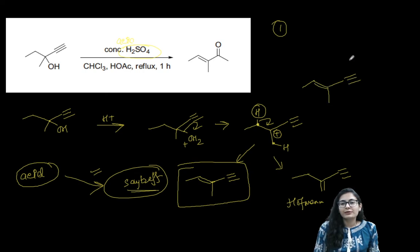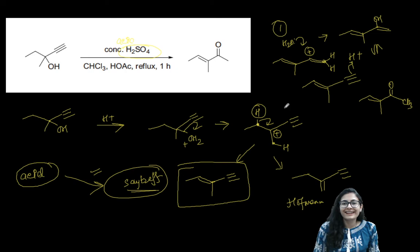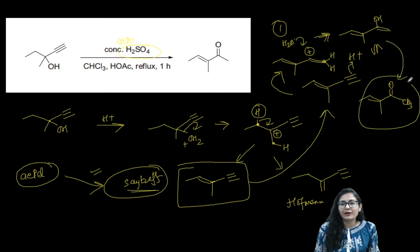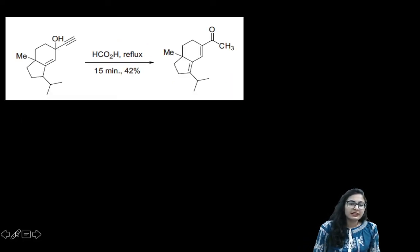This is not the final product yet because the alkyne group is still reactive. The proton goes on the terminal carbon so that the carbocation forms on the secondary carbon. When water attacks, you get the enol, and on keto-enol tautomerism you get the ketone. The final product is the alpha-beta unsaturated ketone, which is the major product.